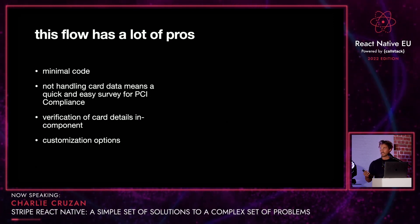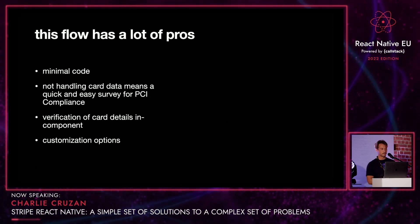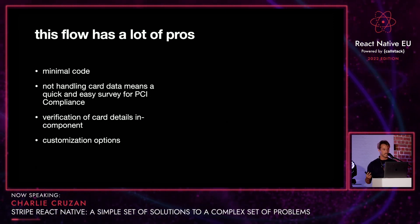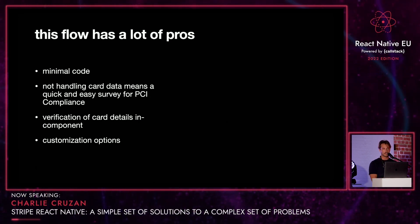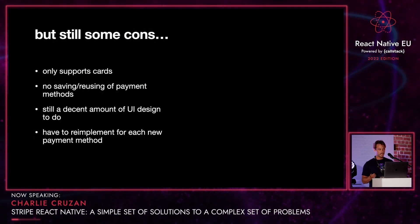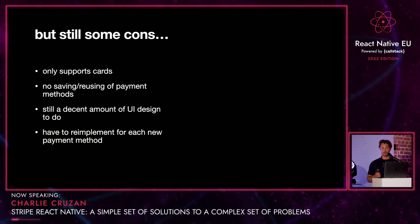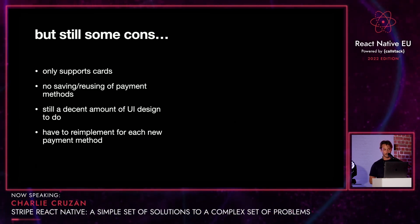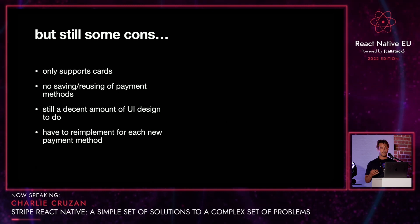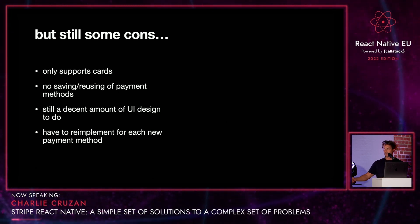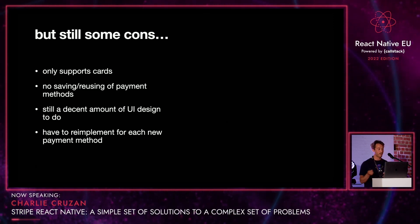This flow has a whole bunch of pros. We have very little code to collect payments, which is great. We're not handling card data, so PCI is really easy, security is easy. We're getting that verification of card details right in the card component, and a whole bunch of customization options if we want them. But it's still pretty bad in a lot of ways. We only have card support. A person can't input their bank account number into the card field and pay that way. If they want to come back and buy more sweet potatoes, they have to input their card again, or we have to create some sort of logic to remember their payment method. We have to design this checkout page, and we have to re-implement this for every new payment method.